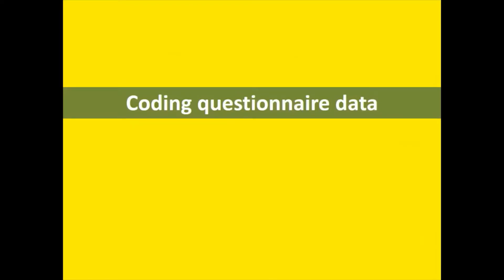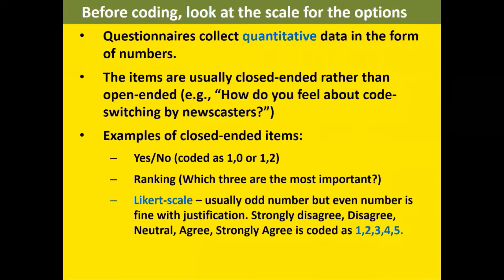Now, assume you already have the questionnaire data. Previously with printed questionnaires we had to key in responses one by one, but now if you use Google Forms, the data comes as an Excel sheet. However, you still have to code the data, because when respondents answer 'male' or 'female', the answers appear as words. You have to turn them into numbers so that you can use Excel or SPSS for further analysis. That's why we call it coding — turning the information into numbers.